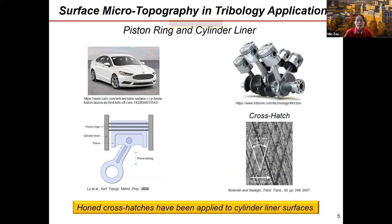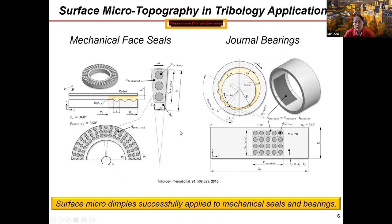There are many successful real-world applications of surface microtexture. One example is the cross-hatched patterns made on the cylinder liner at the piston ring and cylinder liner interface, fabricated by the honing method. These grooves help maintain lubricant at the interface between the piston ring and cylinder liner. Over the last couple of decades there has been a lot of interest in using textured surfaces for mechanical seals and journal bearings to help hydrodynamic lubrication.